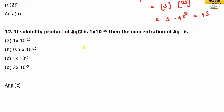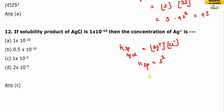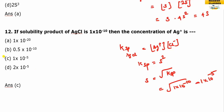If the solubility product of HCl is 1 × 10⁻¹⁰, then the concentration of HCl: KSP = H⁺ × Cl⁻ = S². So S² = 1 × 10⁻¹⁰, therefore S = √KSP = 1 × 10⁻⁵. The answer is C.